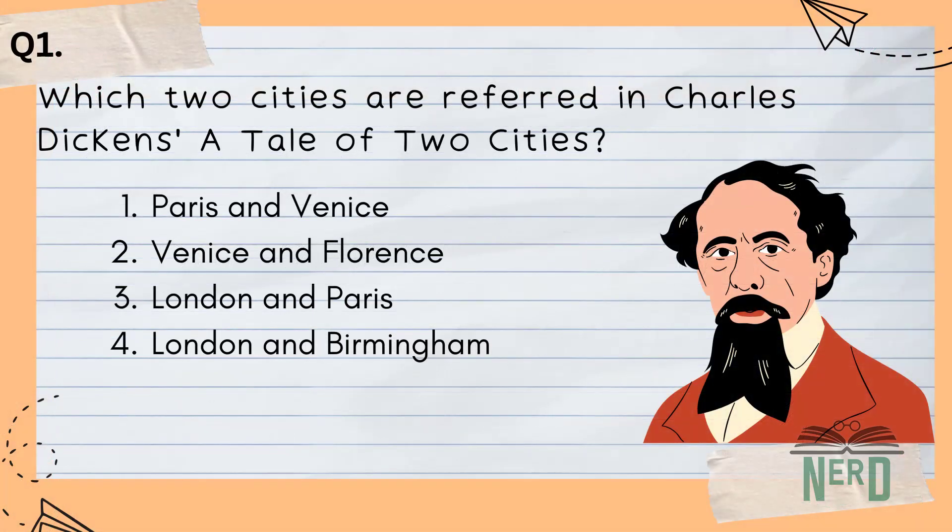Question 1. Which two cities are referred to in Charles Dickens' A Tale of Two Cities? Option 1: Paris and Venice. Option 2: Venice and Florence. Option 3: London and Paris. Option 4: London and Birmingham. And the answer is 3, London and Paris.